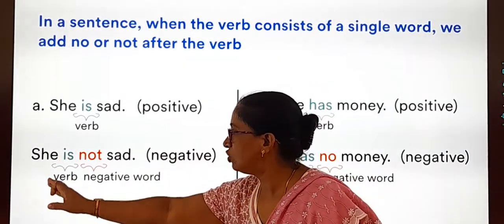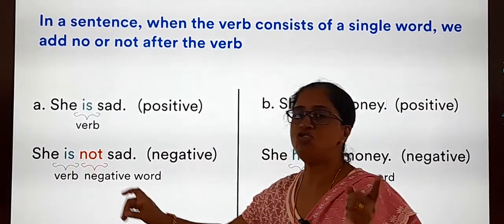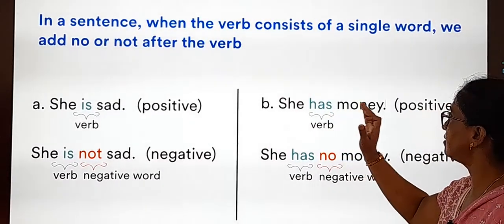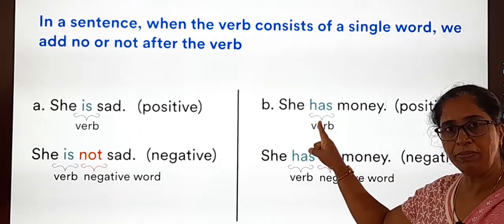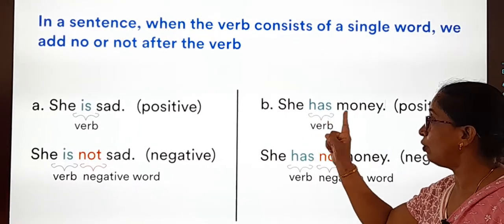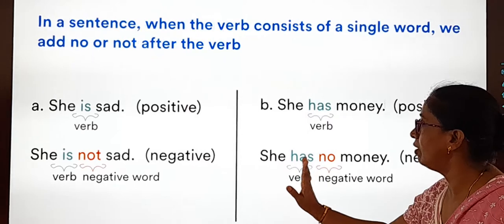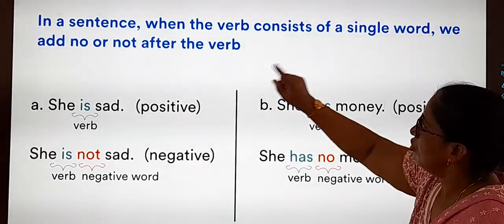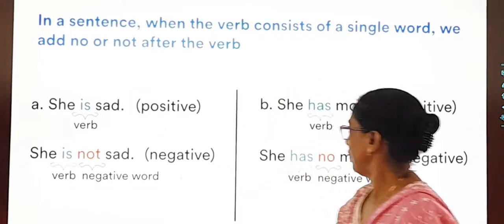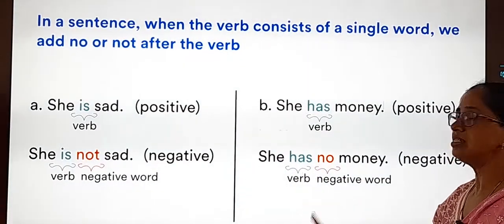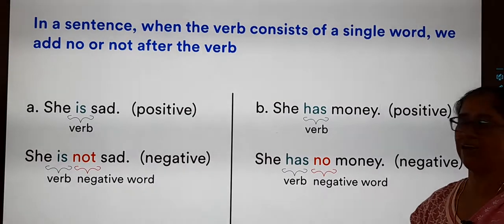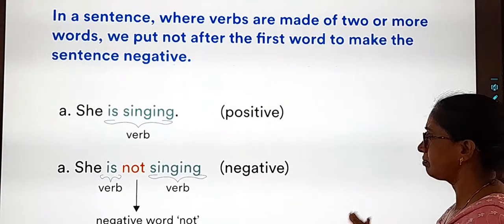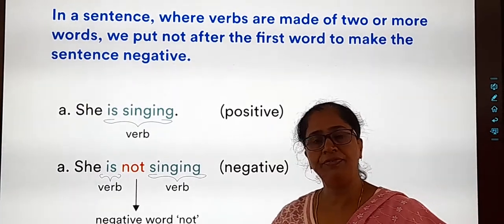Next: 'She has money.' 'Has' is the verb. After the verb 'has', position the word 'not' or 'no'. Here it should be 'no' — 'She has no money' — and this becomes a negative sentence.